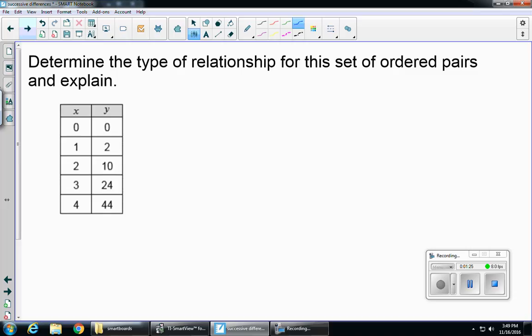So here's a table. The directions say, determine the type of relationship for this set of ordered pairs and explain. So in order to do this, we're going to find our successive differences. I'm going to take my y values and I'm going to subtract them starting from the bottom up.